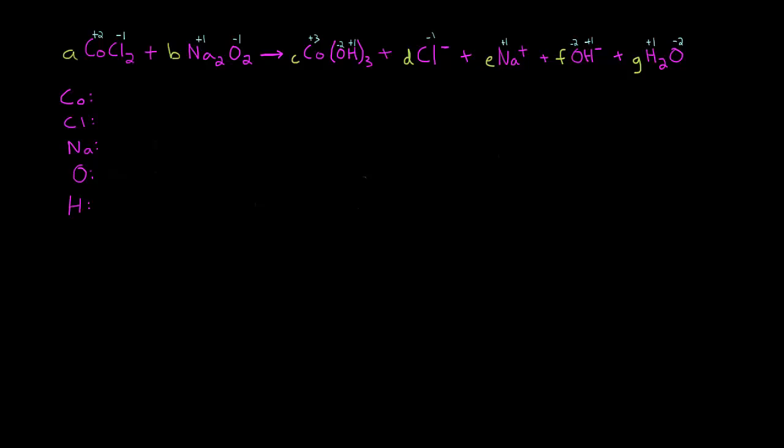Here we have a reaction with seven unknowns but only five unique elements: cobalt, chlorine, sodium, oxygen, and hydrogen. Usually to solve a system like this you need N equations for N unknowns, so we're going to have to come up with two more equations somehow. Luckily that's pretty easy to do using formal charge and oxidation states.